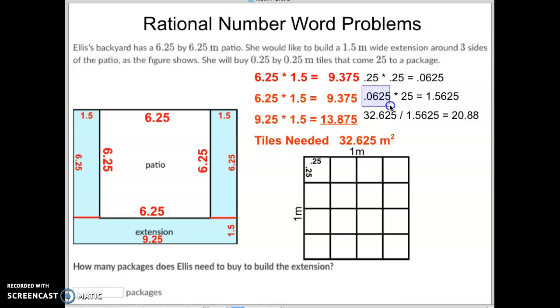Since we need 32.625 square meters and one package is only 1.5625 square meters, we need to take this amount divided by that amount to get to 20.88.